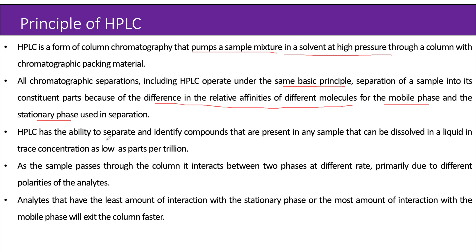HPLC has the ability to separate and identify compounds that are present in any sample that can be dissolved in a liquid, in trace concentrations as low as parts per trillion. As the sample passes through the column, it interacts between two phases at different rates, primarily due to different polarities of the analyte. Analytes that have the least amount of interaction with the stationary phase or the most amount of interaction with the mobile phase will exit the column faster.